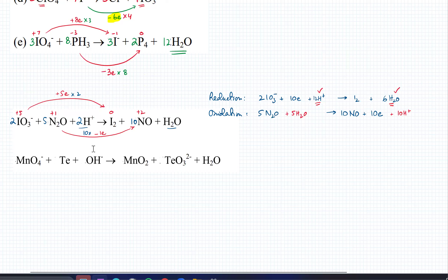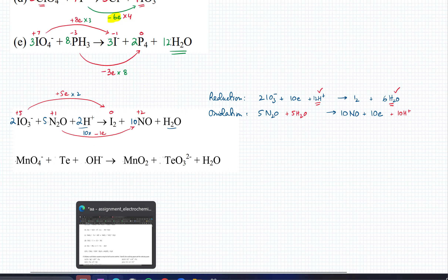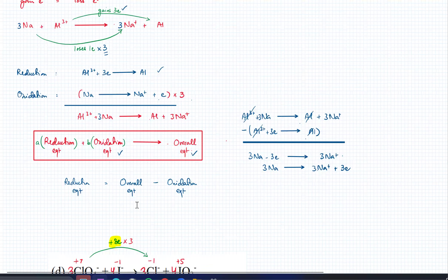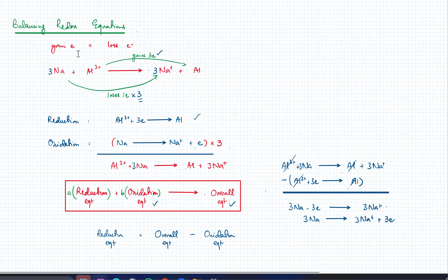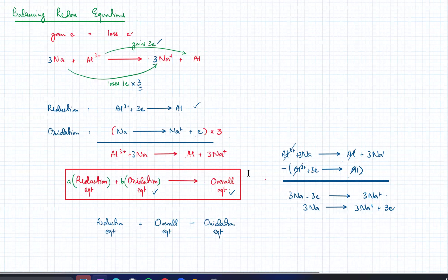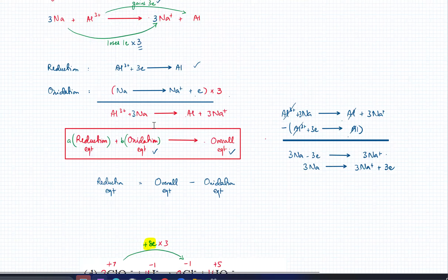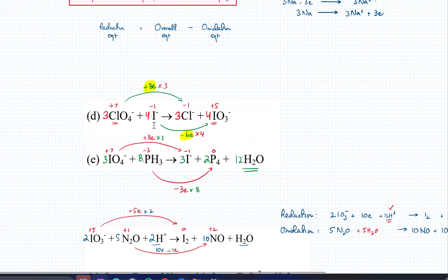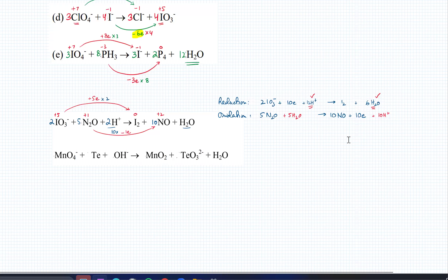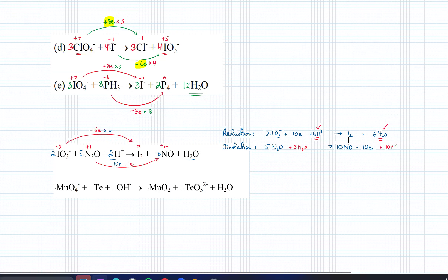Next time we'll practice this more. You already know how to go from half equations to the overall equation — it's the reverse that's trickier: given the overall equation, how do you extract the reduction or oxidation half equation? We'll keep practicing balancing electrons and then move on.